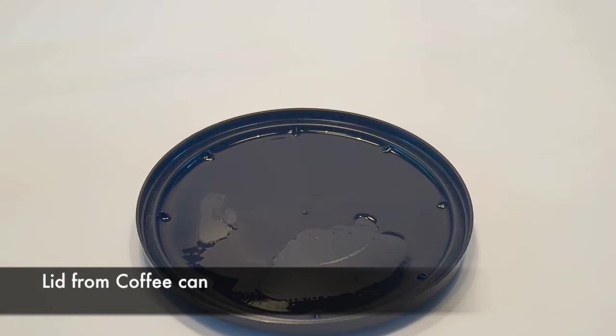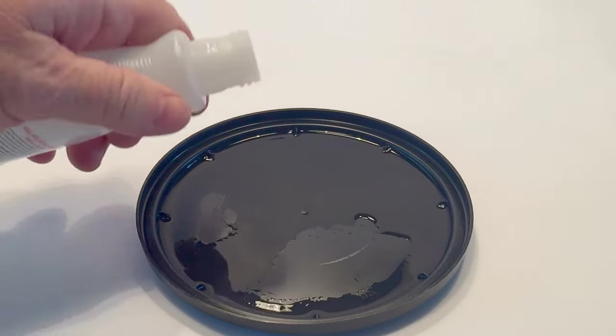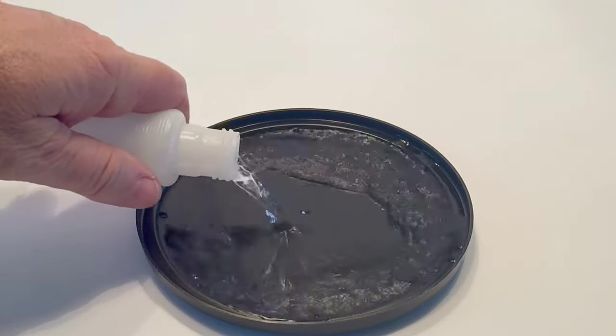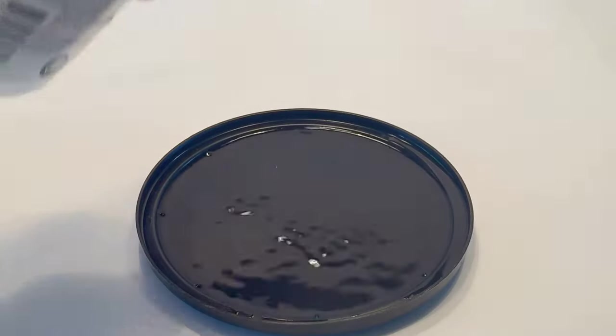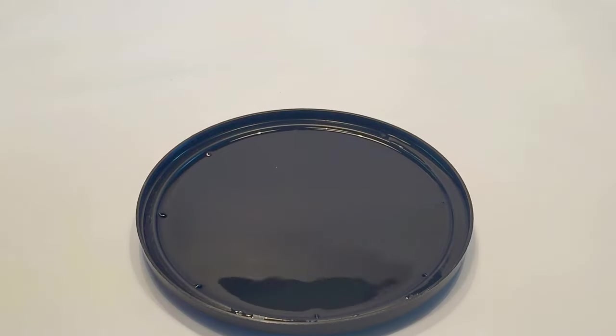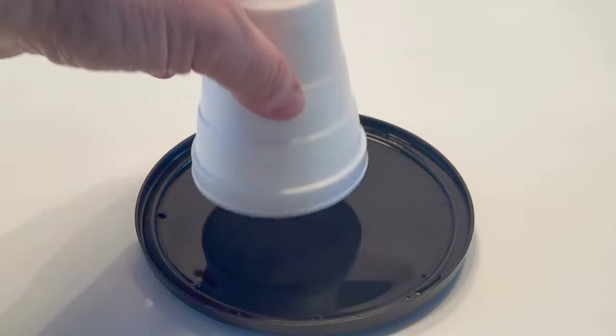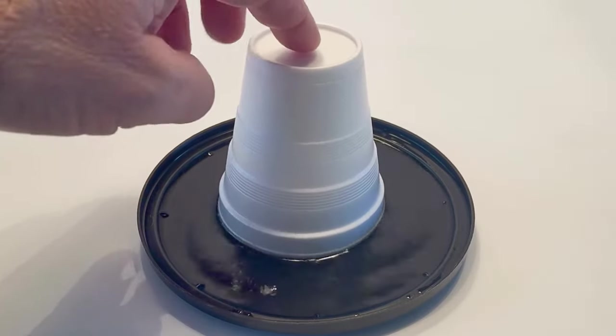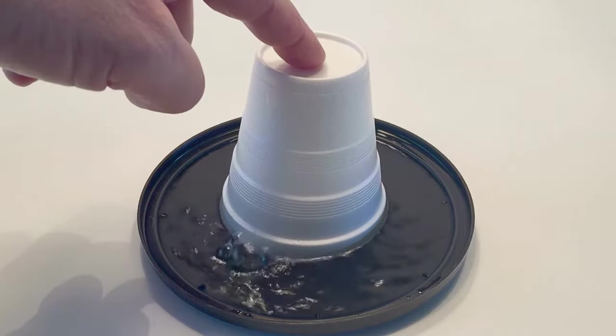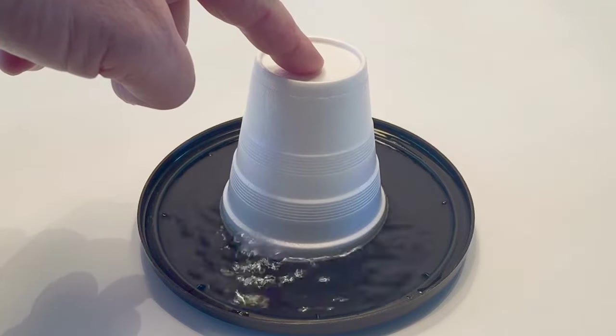Take your acetone and pour it in a bowl or what I have here is a Folgers coffee lid. Fill it up just so it covers the surface of the lid. Then take your styrofoam cup and put it in. Ask the kids what's going to happen and give it a little bit of pressure by pushing it down. You can see it starts to look like it's boiling.